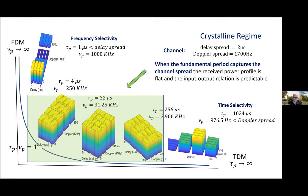And what we see is that as the delay domain period shrinks, we get frequency selectivity in FDM. As the Doppler domain period shrinks, we get time selectivity in TDM.